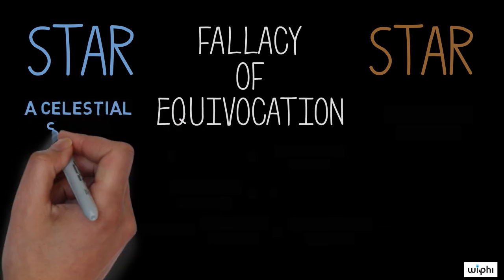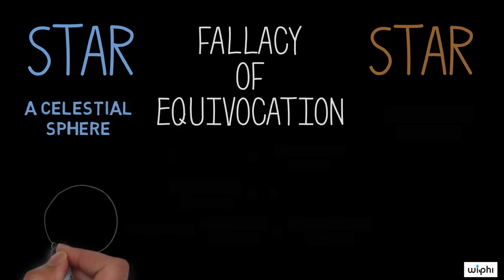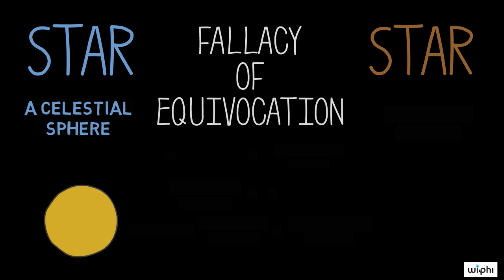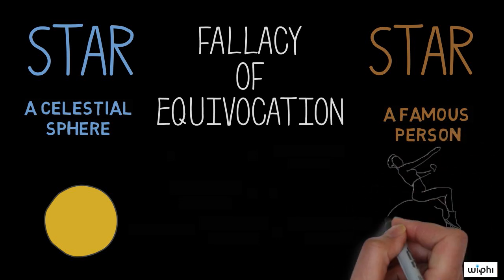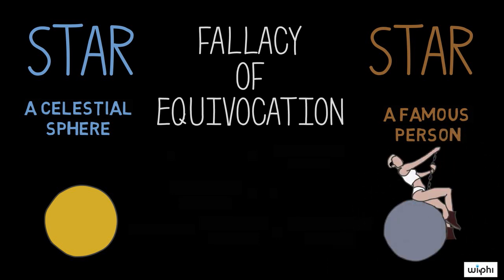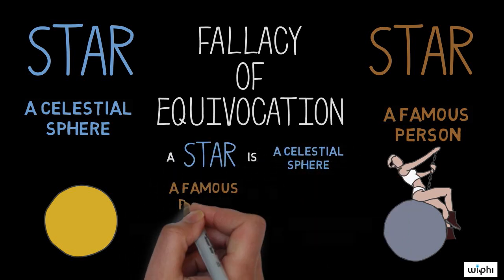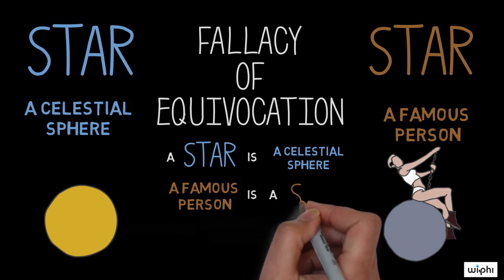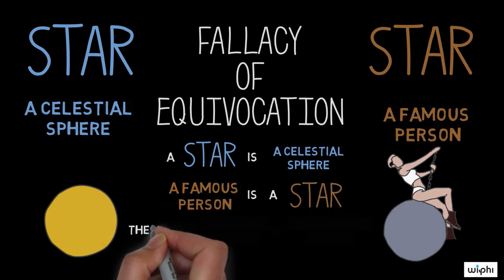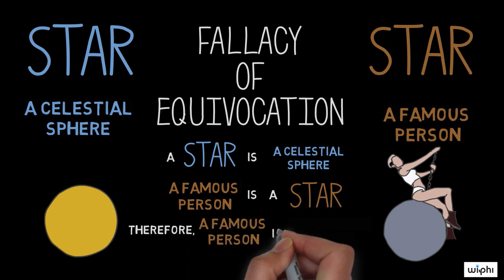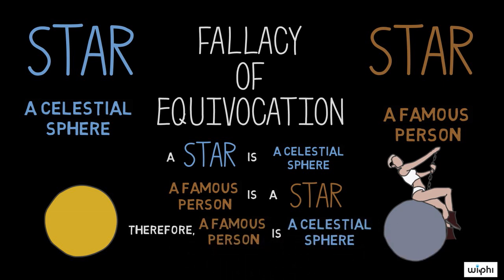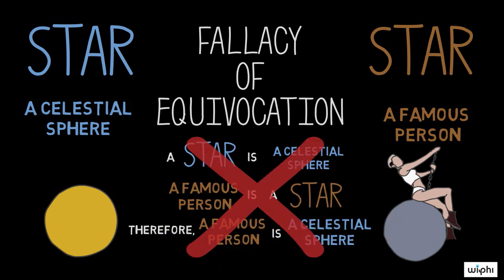The word 'star' is used with different meanings in the two premises. In the first premise, 'star' is intended to mean something like a celestial sphere of plasma. But then the meaning of 'star' shifts in the second premise, where 'star' refers to a famous person. The premises equivocate between two meanings of the word 'star.'